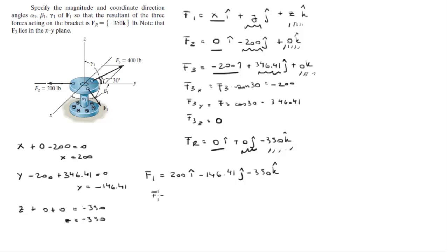With these values we can find the magnitude, which is easy to find. Just take the X component squared plus the Y component squared plus the Z component squared, square root them together, and you get that the magnitude is 428.9.